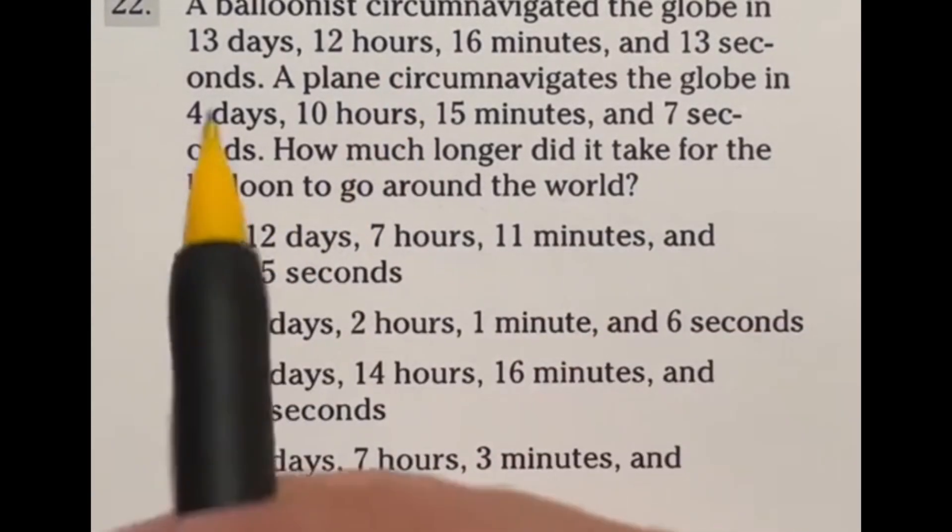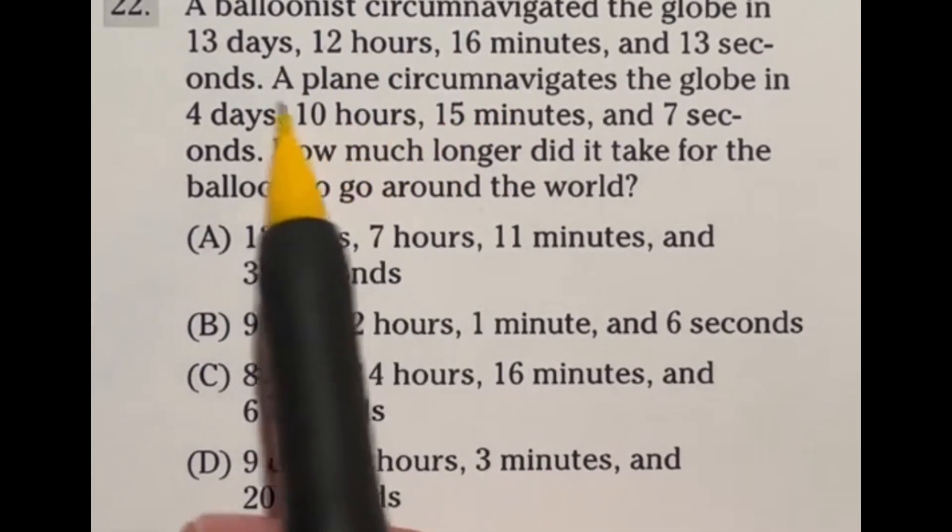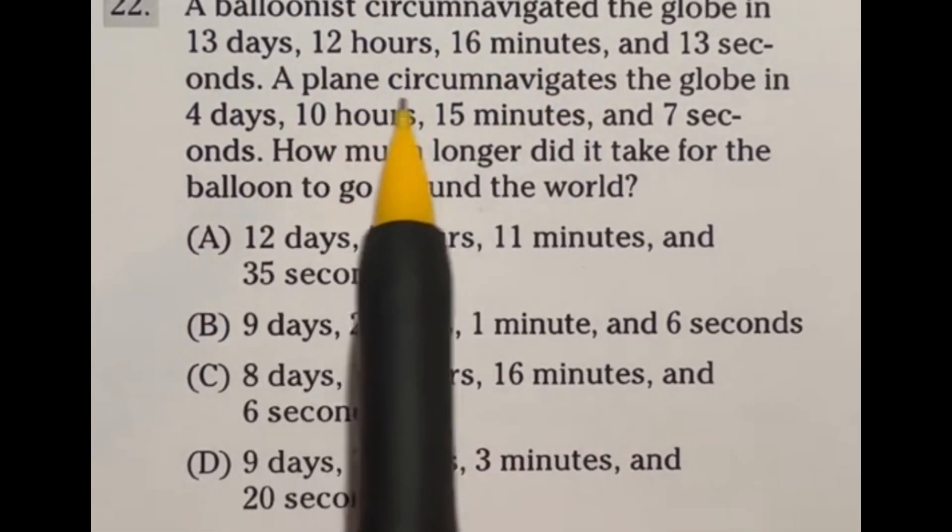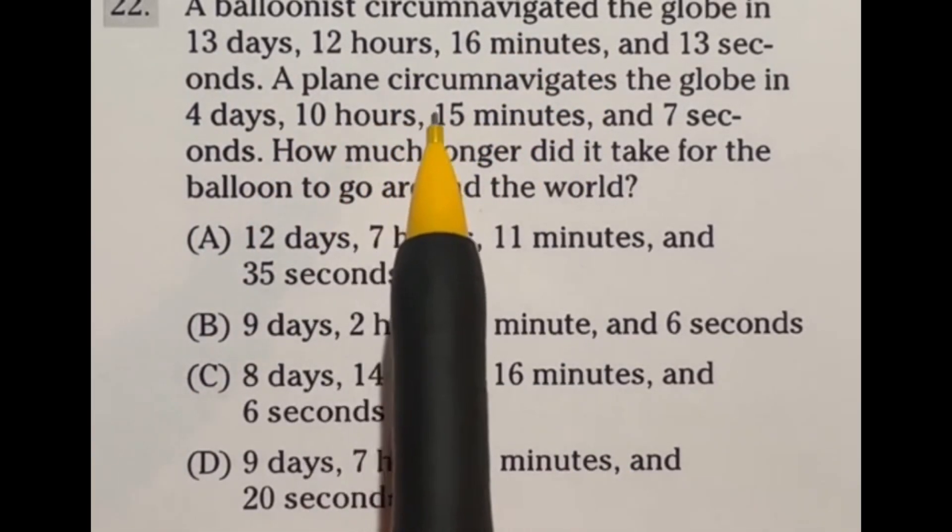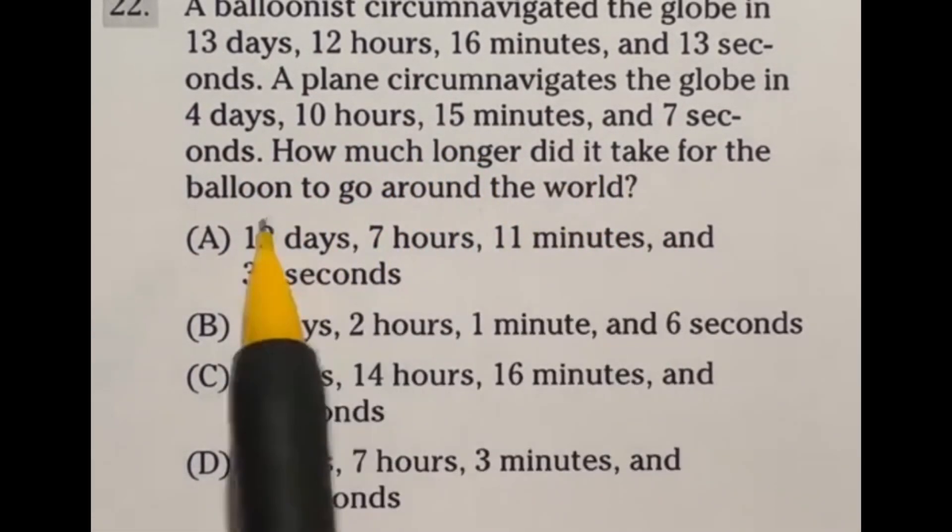So this is a crazy question just because it has so many units that we're dealing with at the same time here. And they don't always carry over into a tens place or something. Let's take a look. It says a balloonist circumnavigated the globe in 13 days, 12 hours, 16 minutes, and 13 seconds. A plane circumnavigates the globe in four days, 10 hours, 15 minutes, and seven seconds. How much longer did it take for the balloon to go around the world?